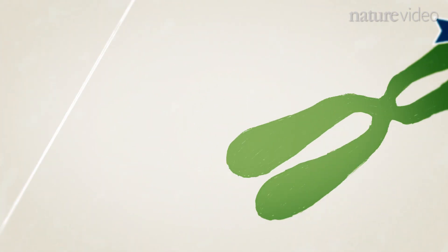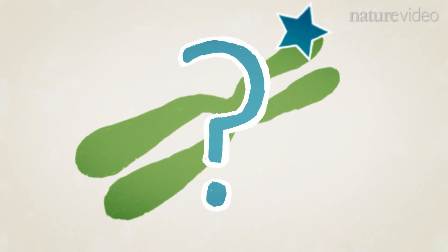The normal function of the Huntington gene is not fully understood but it is important for the development of the nervous system.